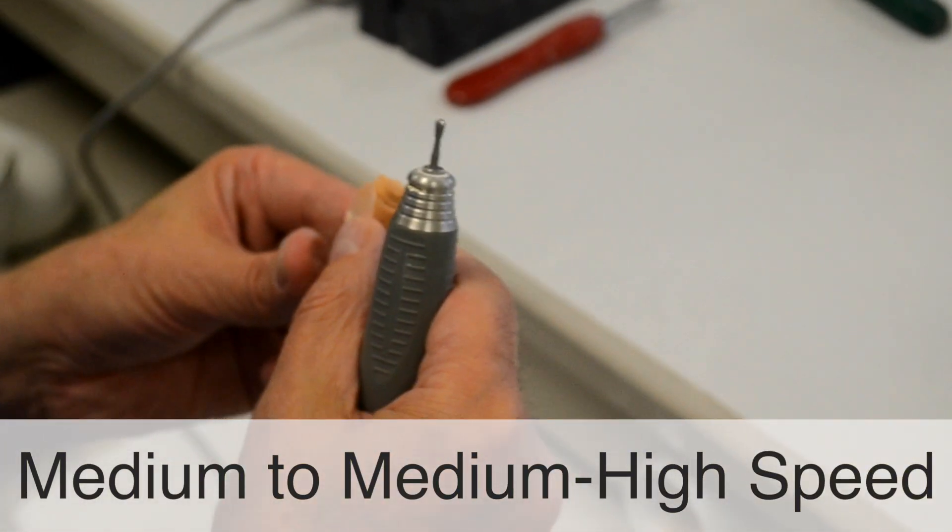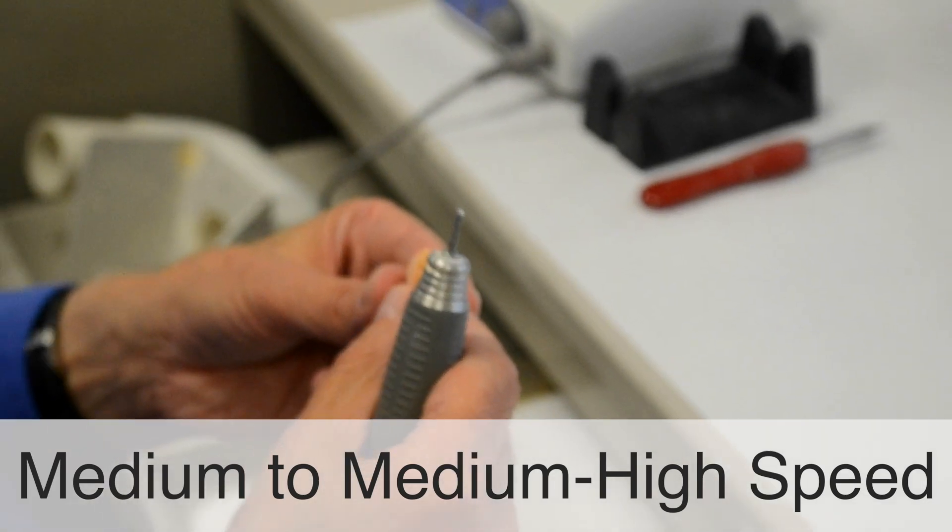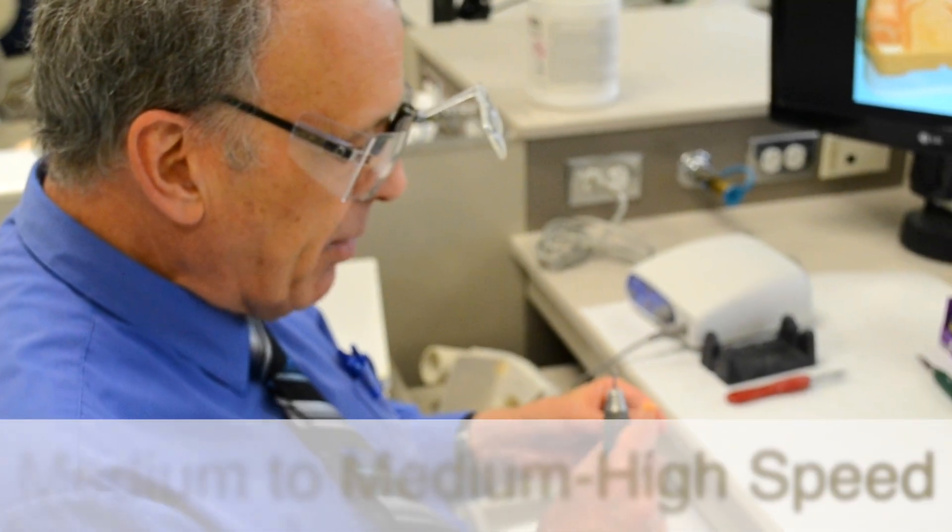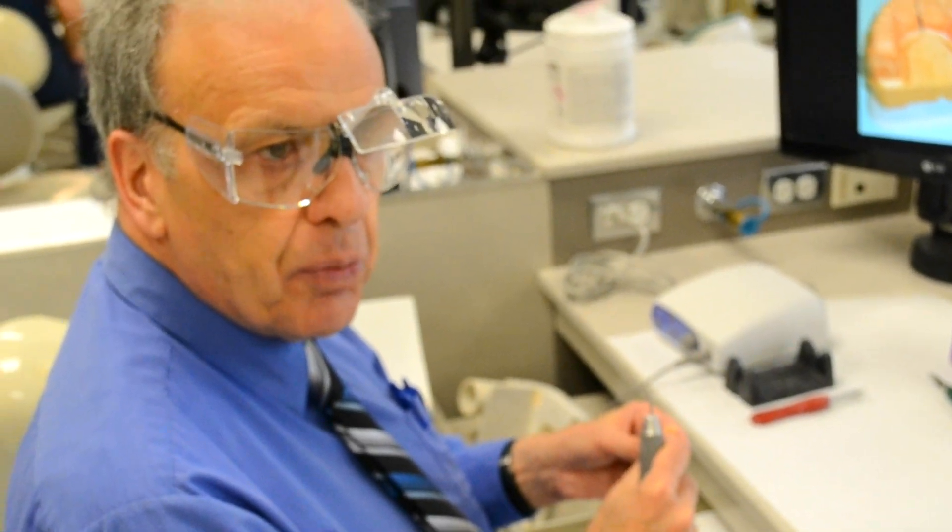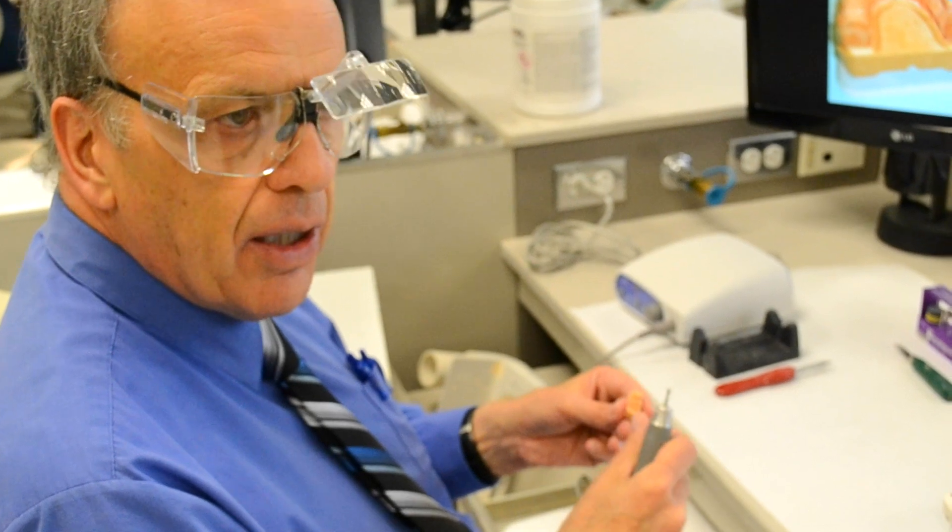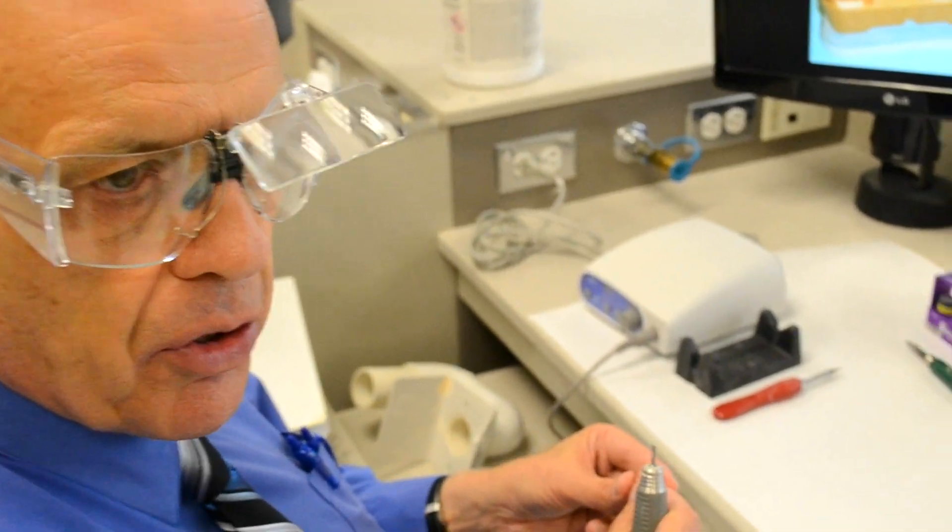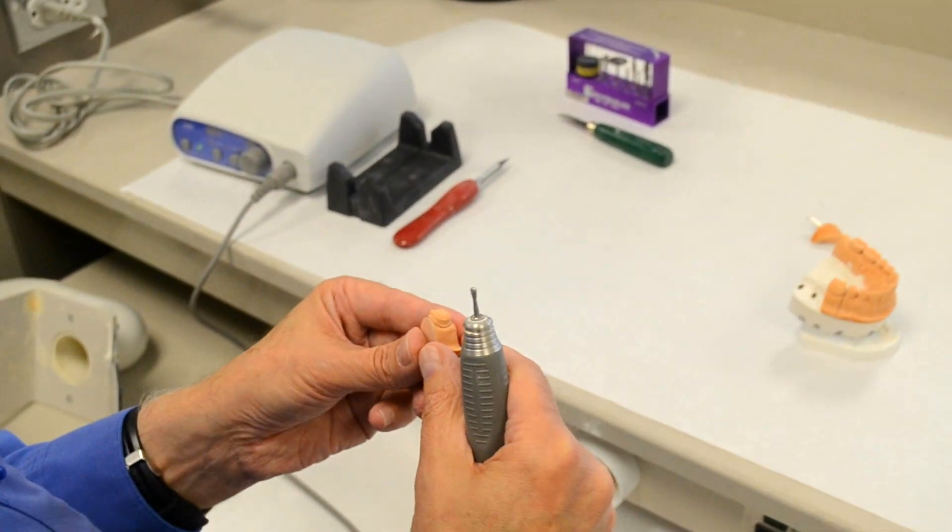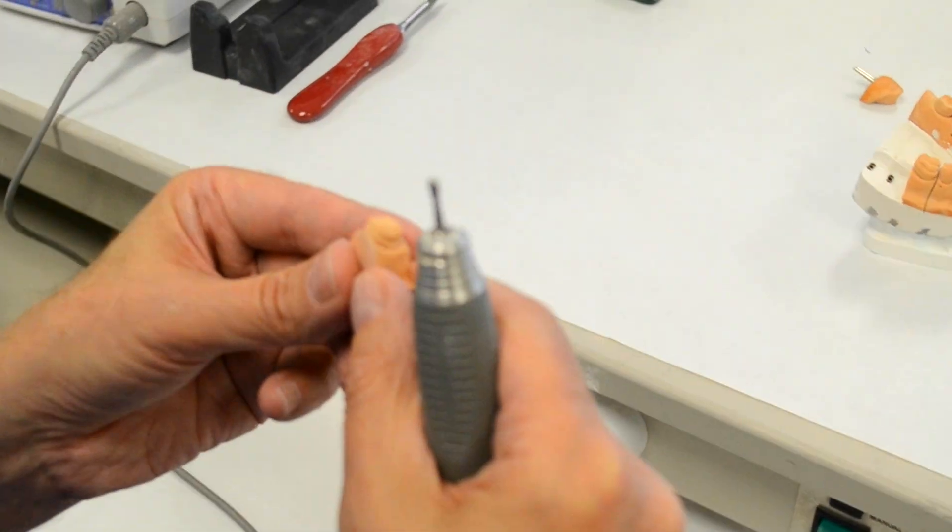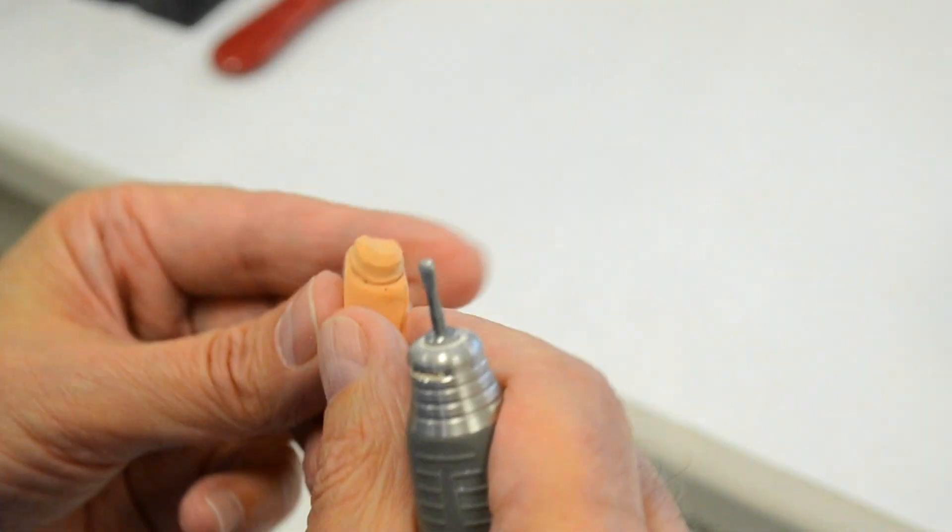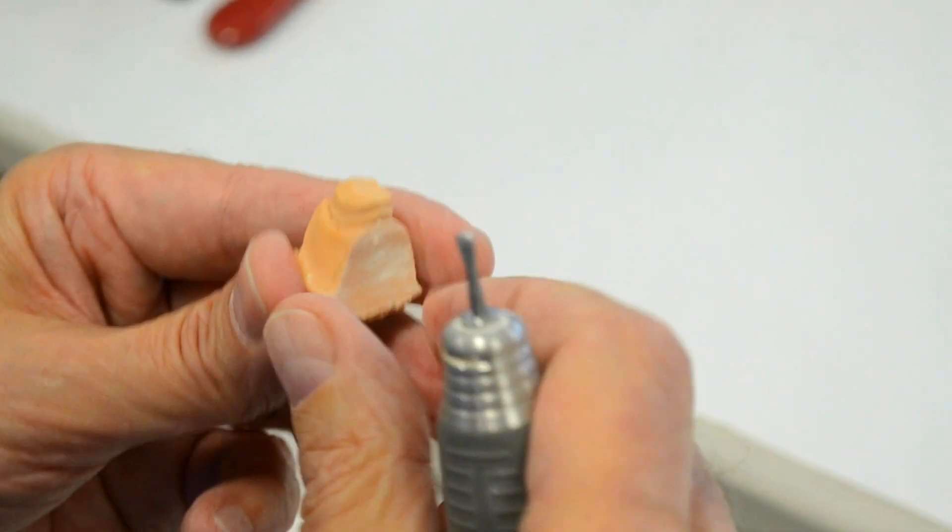When the burr rotates at a very low speed, there is a greater chance of the flutes grabbing onto or engaging the gypsum in the die and subsequently causing the burr to skip, which in turn can lead to damage to the die. So it's best to rotate the burr at medium or medium-high speed.